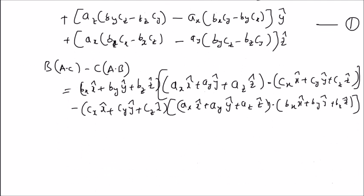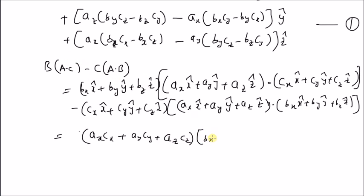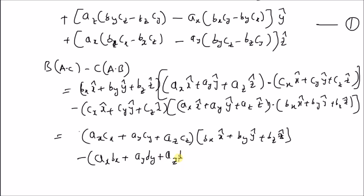So these are the weights for vectors B and C respectively. This is equal to: we find the dot product, where x-hat dot x-hat is 1, so we have ax·cx plus ay·cy plus az·cz — that is the dot product A dot C. Now we are weighting vector B with this dot product, giving bx x-hat plus by y-hat plus bz z-hat. Next, the dot product between A and B is ax·bx plus ay·by plus az·bz, multiplied by vector C, which is cx x-hat plus cy y-hat plus cz z-hat.